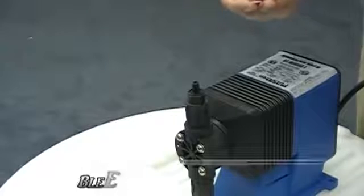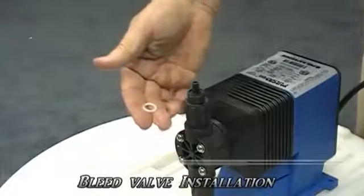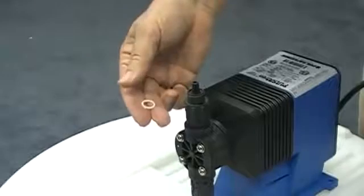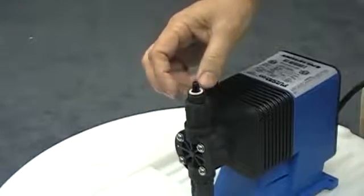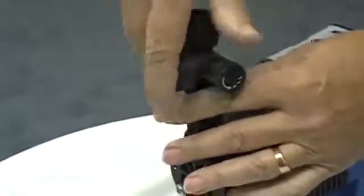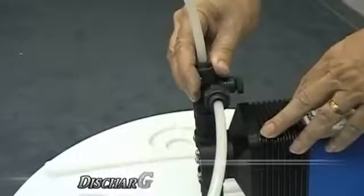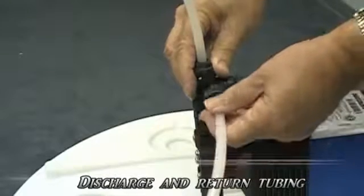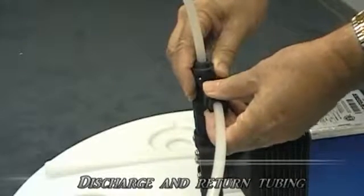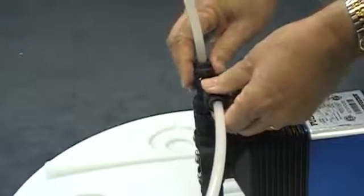The first step of installing the discharge tubing is to install the bleed valve. There is an O-ring in your accessory kit, which is installed in the discharge valve groove. Then the bleed valve is attached to the top of the discharge valve. The discharge tubing is connected to the top of the bleed valve. The return tubing is connected to the side of the bleed valve and then placed in the top of the tank. All of these fittings are to be tightened hand-tight.